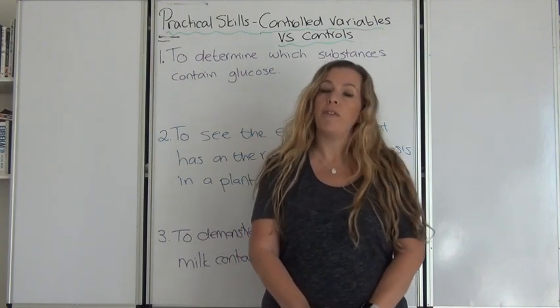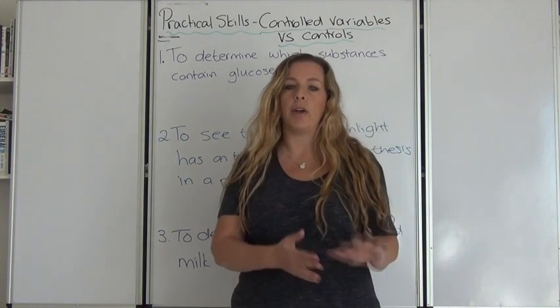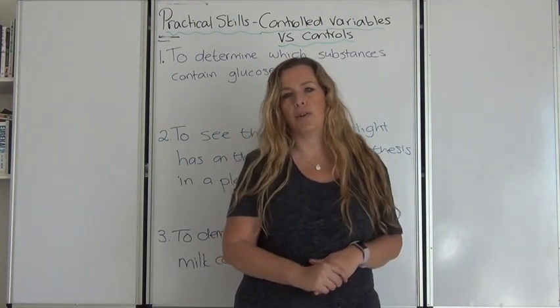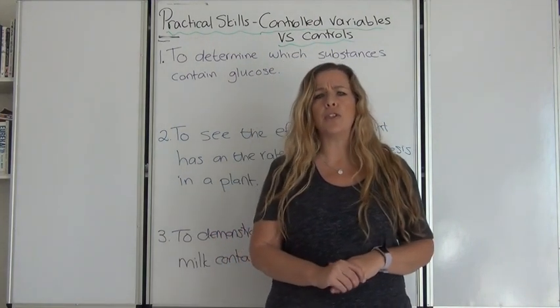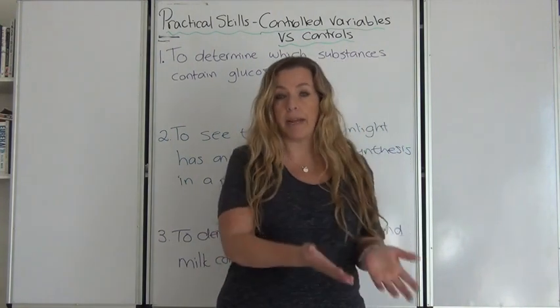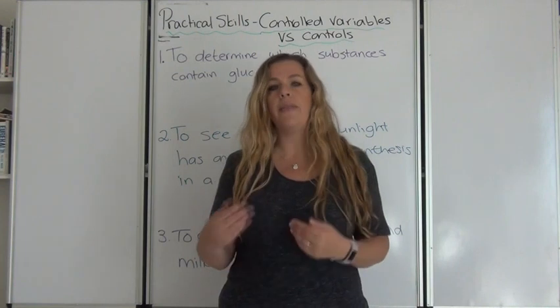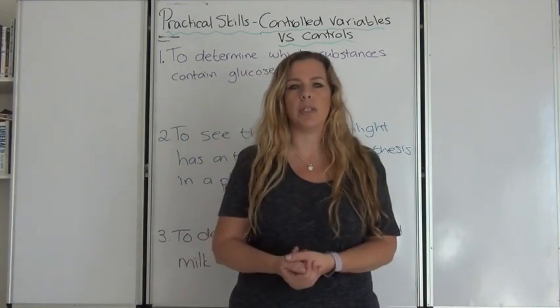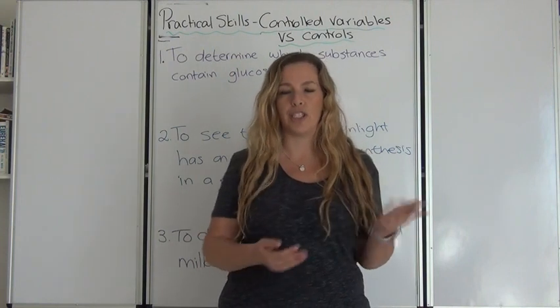Some people get very confused between the two. I'm going to explain the differences so hopefully you'll understand. When you do an experiment you have one independent variable that you are varying only one, and then you have your resultant variable which is your dependent variable, and that depends of course on what you have changed in the experiment.